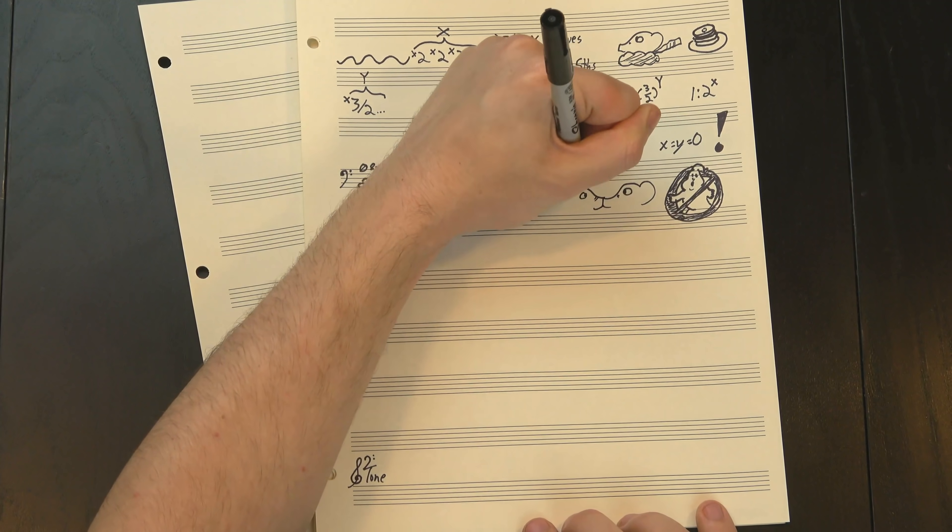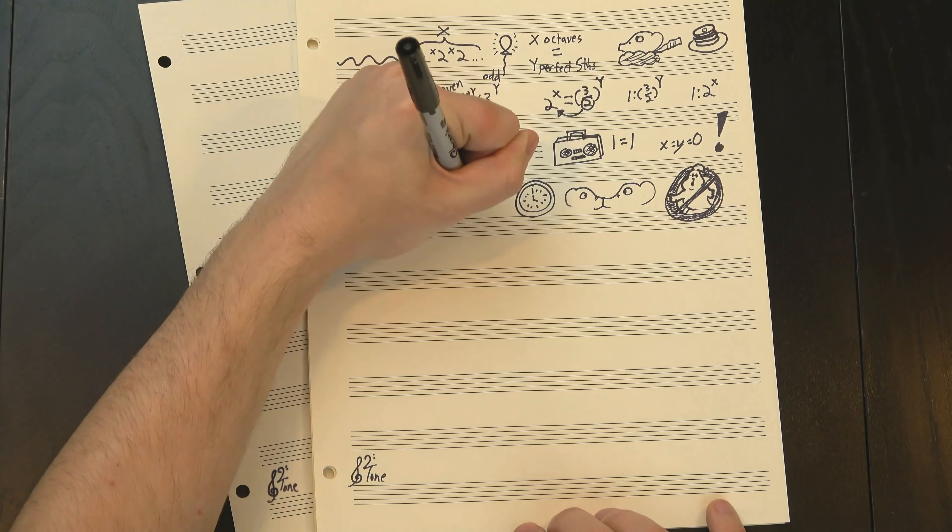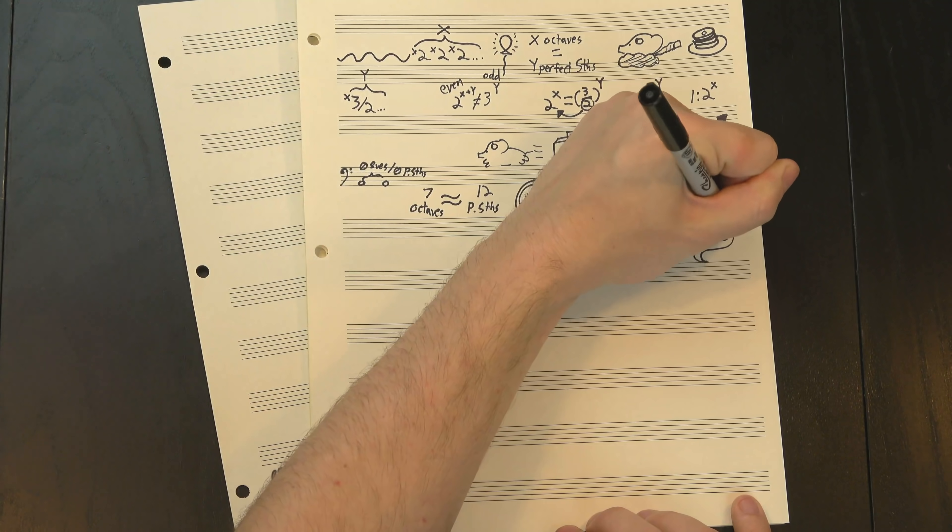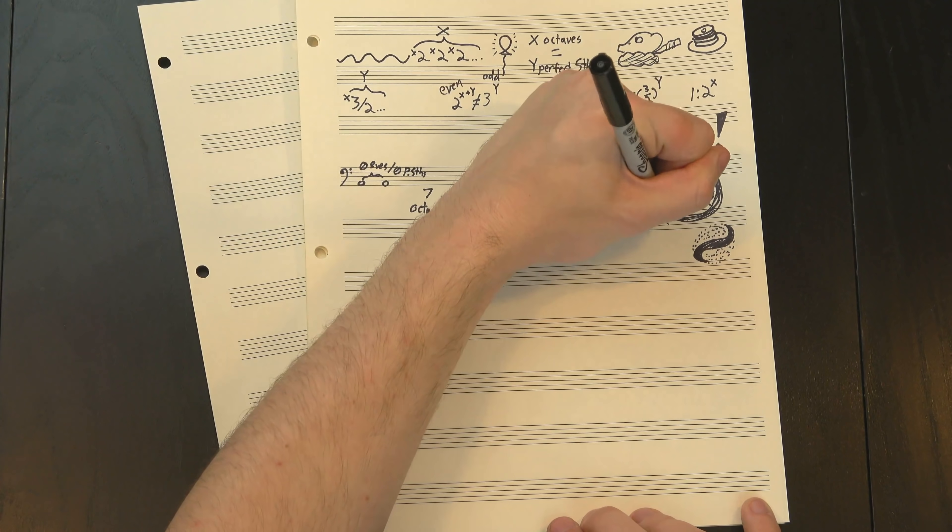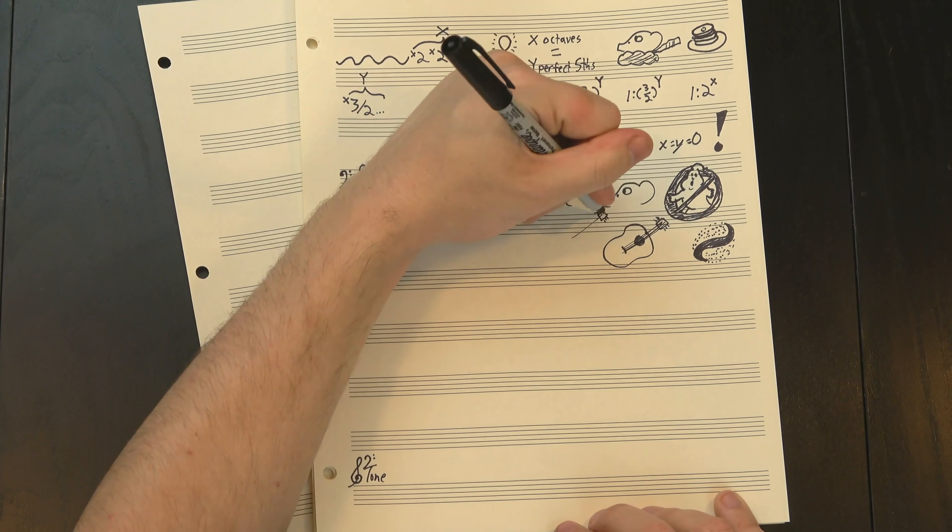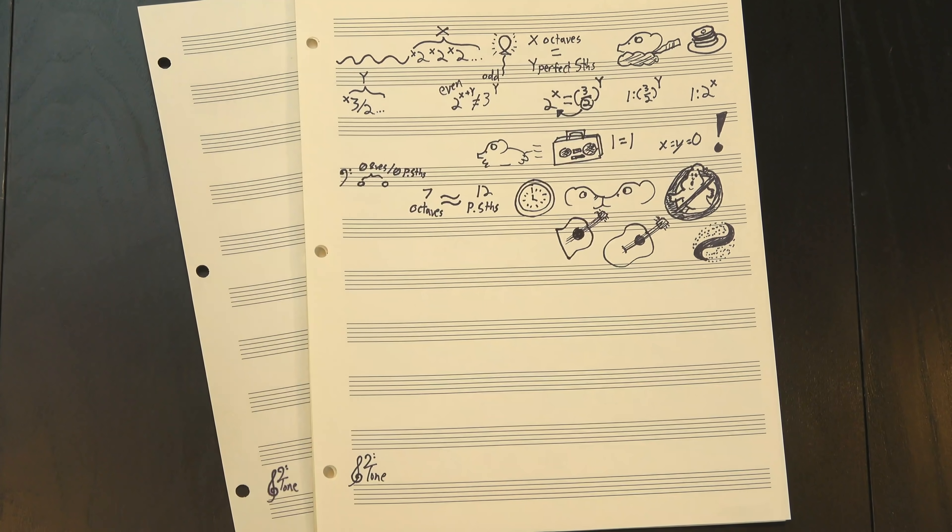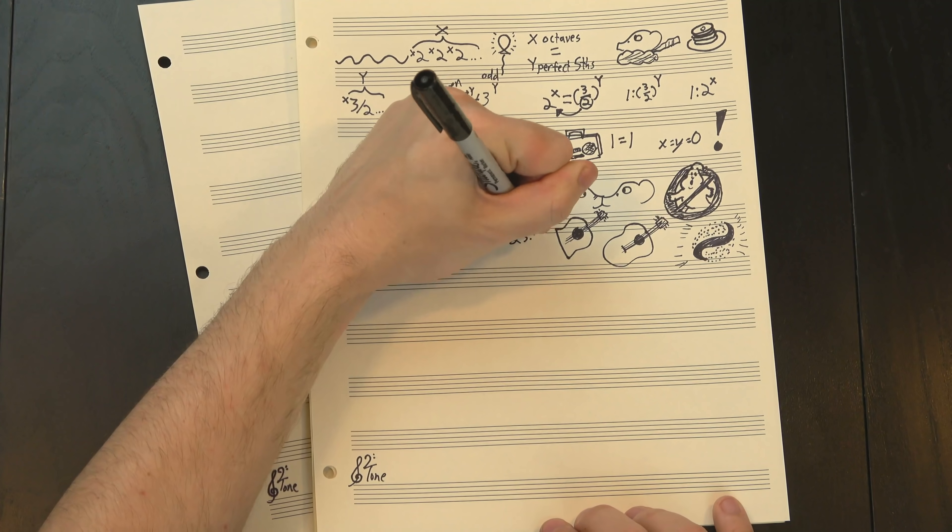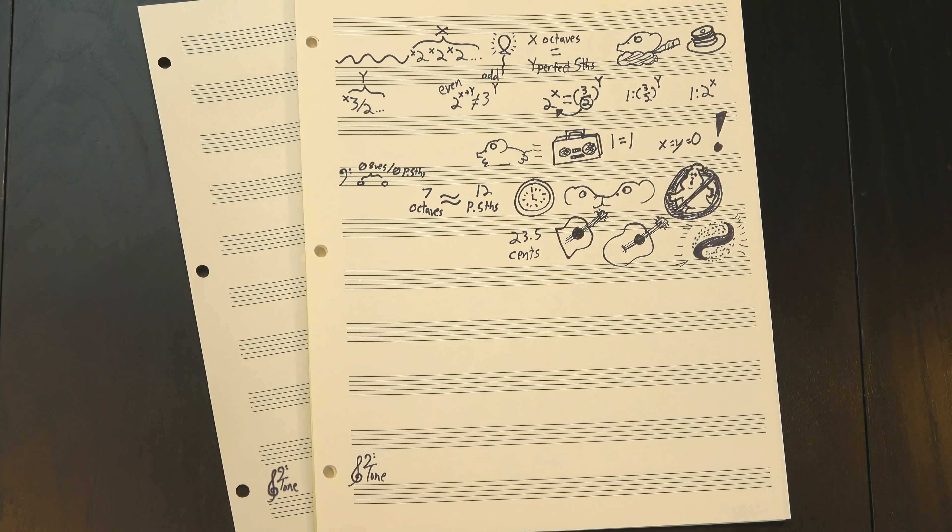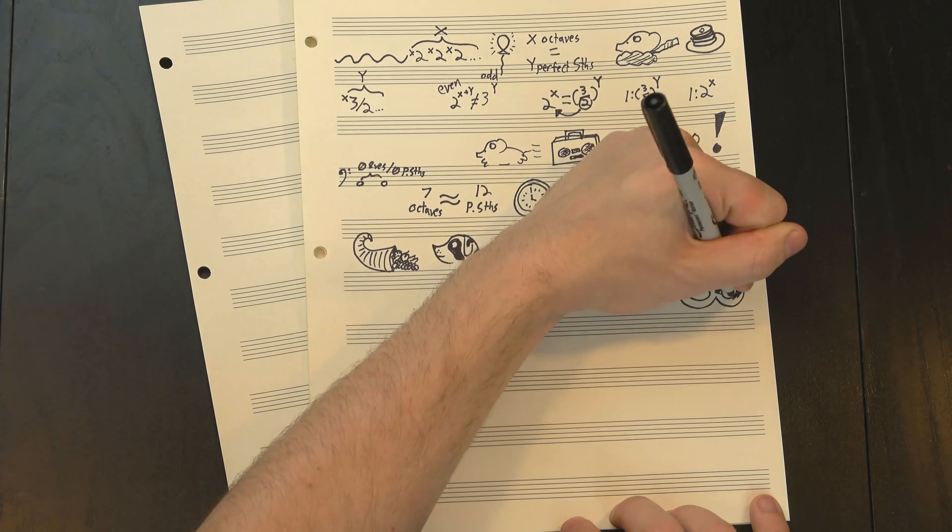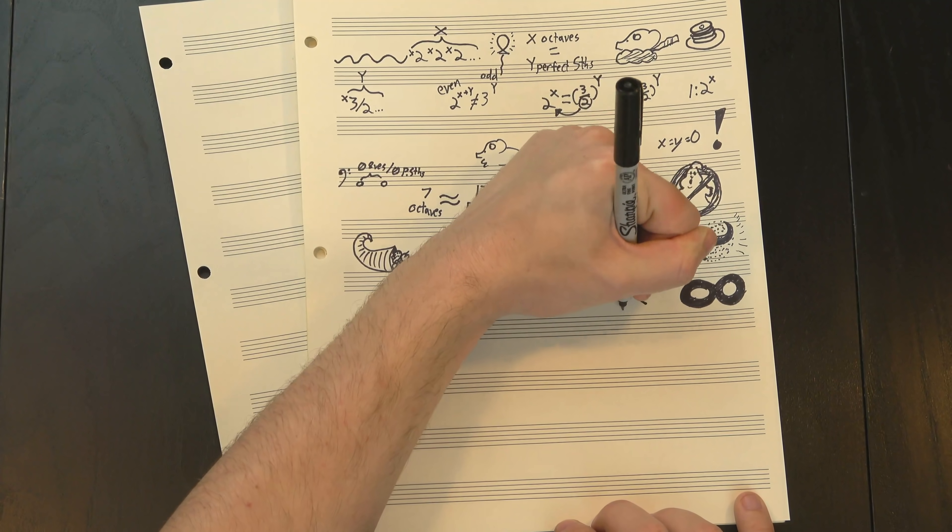But that doesn't mean they don't get close. It takes a while, but 12 perfect fifths is actually almost identical to 7 octaves. I'm not gonna play it because 7 octaves is a huge distance. For reference, your standard 6-string guitar has a range of roughly 4 octaves, so this interval is almost two whole guitars wide. But I can tell you that after all that distance, these two notes wind up only about 23 and a half cents away from each other, which is pretty spot on. And there's plenty of other commas out there too. Infinitely many, in fact, depending on exactly how deep you want to go.